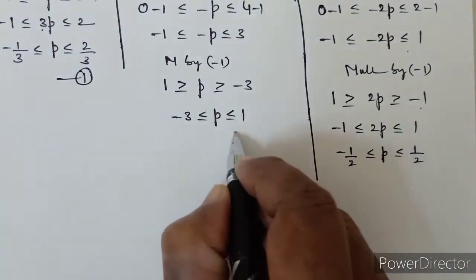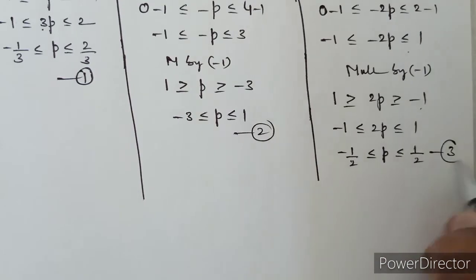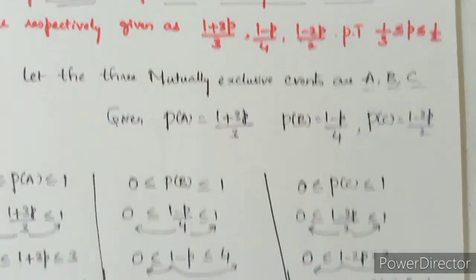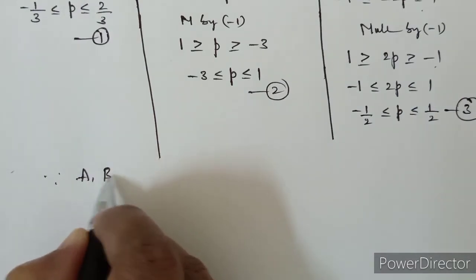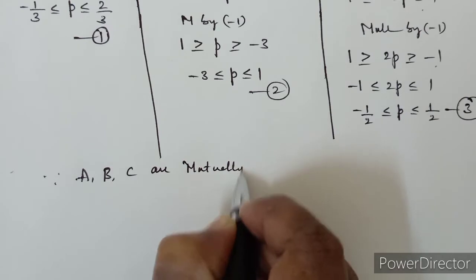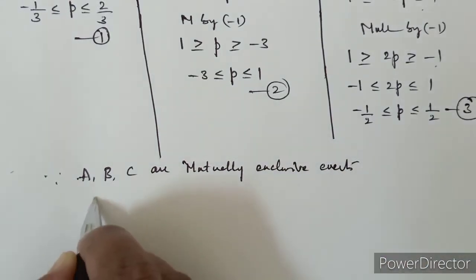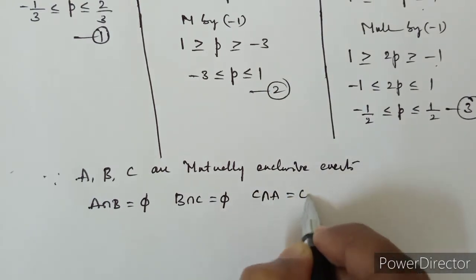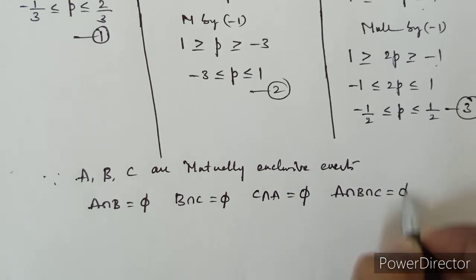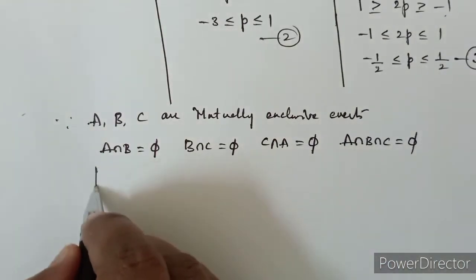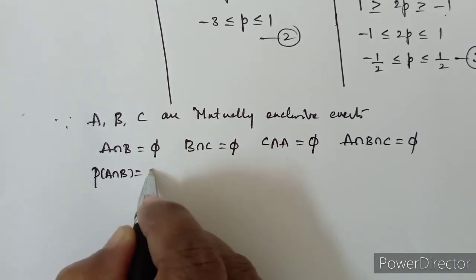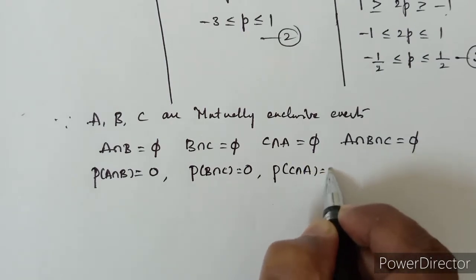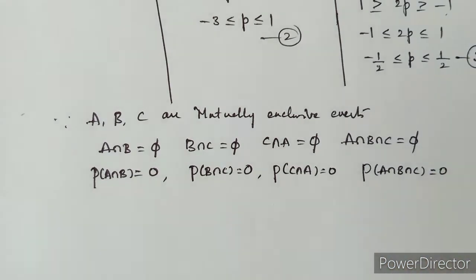So equation 1 gives -1/3 ≤ p ≤ 2/3, equation 2 gives -3 ≤ p ≤ 1, and equation 3 gives -1/2 ≤ p ≤ 1/2. Since A, B, C are mutually exclusive events, P(A∩B) = 0, P(B∩C) = 0, P(C∩A) = 0, and P(A∩B∩C) = 0.